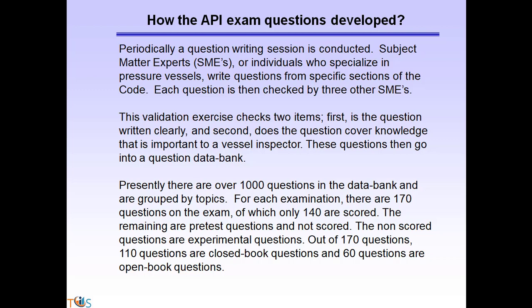Questions then go into the data bank, which currently has over a thousand questions. For each exam there shall be 170 questions, of which only 140 are scored. The remaining 30 questions are pre-test questions and are not scored. All questions are shuffled together so you don't know which ones are scored or not, so you have to answer all 170. Out of these, 110 are closed book and 60 are open book.